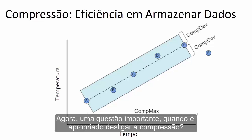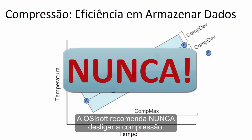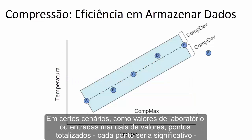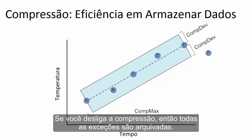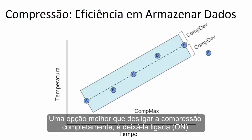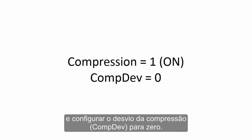This raises a very important question: when is it appropriate to turn off compression? OSIsoft generally recommends never turning off compression, but there might be a few scenarios such as lab values or manually entered values, totalized points where every point is significant, or governmental requirements where you need to archive all collected data. If you turn off compression, then all exceptions are archived. A suggested better option instead of turning compression off completely is to set compression to ON but set compression deviation to 0.